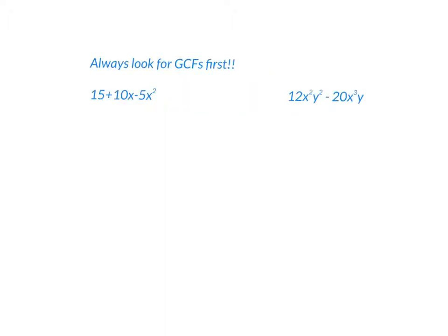First thing: when you factor, you always look for the GCF first, no matter what kind of problem it is. Look for things the terms have in common. In this first one, they all have a 5 in common, so factor out the 5. 5 goes into 15 three times, goes into 10 two times, don't forget your X, goes into the 5 one time. That's completely factored.